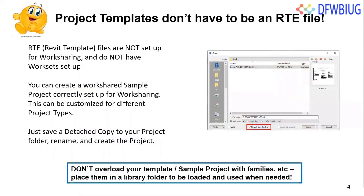Let's look at ways to get set up and go with your Revit project. Your project template does not have to be an RTE file — Revit offers pre-made templates for architecture, structure, and construction. For workshared projects, you can save an existing project, clear the geometry, and save it as a new project. One key thing: don't overload your template. It's a template, not a library. Keep families in family libraries so you only have one location to update.